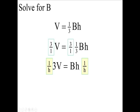So now we have three V over H equals capital B, and you're going to have H over H. H divided by H.